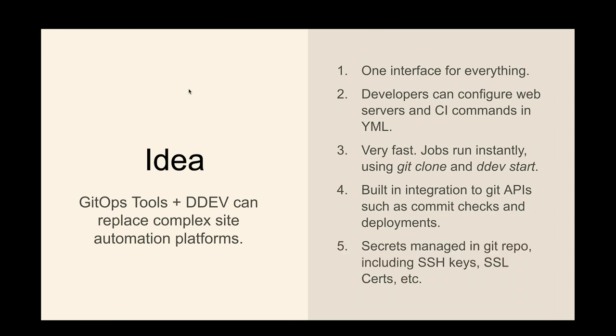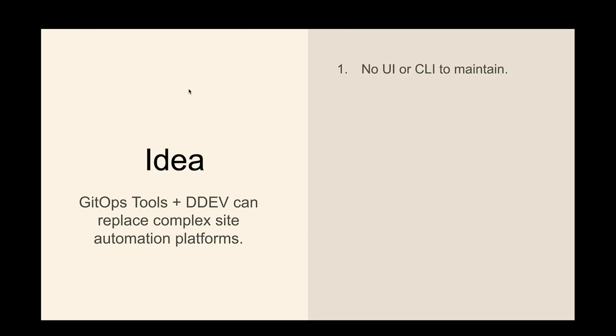GitHub has secrets management right in the repo. The client gets the secrets — they can click settings, click secrets, edit their SSL there, whatever special thing they need in there. No UI, no CLI needed. The server can be kind of firewalled — GitHub doesn't have to reach it. The runners are only waiting for stuff, so you can be totally isolated.